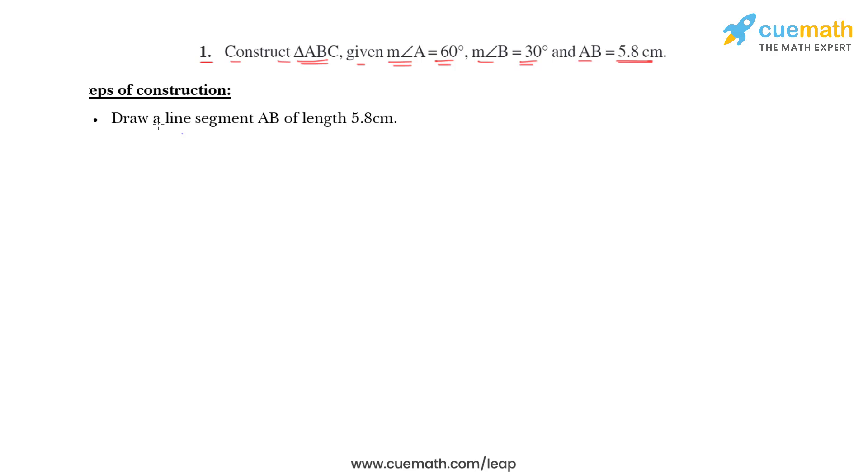First step, draw a line segment AB of length 5.8 centimeters. So, first of all, we will start with AB by making AB a line segment. We can make a line segment AB, point A, point B and length is 5.8 centimeters.